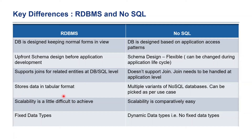RDBMS stores data in tabular format — that is, data is stored in rows and columns — while in NoSQL there are multiple variants. In MongoDB it will be JSON format; eventually the data will be stored in binary format of that JSON. On the RDBMS side, scalability is a little difficult to achieve, while NoSQL is built keeping scalability in view. Also, RDBMS has fixed data types while NoSQL supports dynamic data types — that is, no fixed data types.